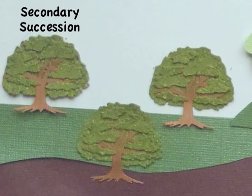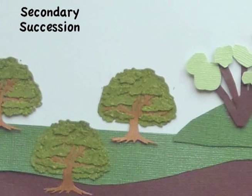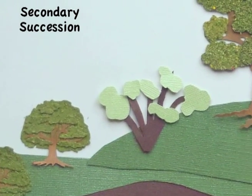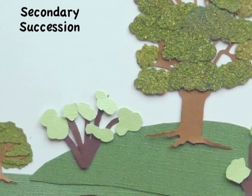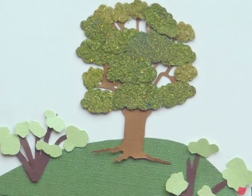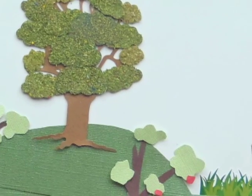Secondary succession. So that's why those trees are so small compared to other parts of the riparian zone. This area must not have been disturbed for a while. Why do you say that? Well, succession continues to move forward allowing for older vegetation and greater diversity in the absence of disturbance, which we see here.